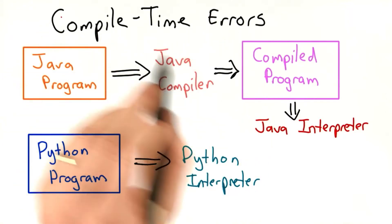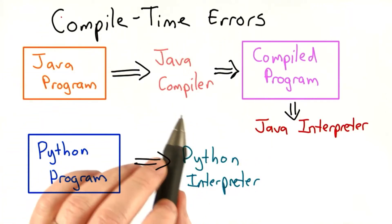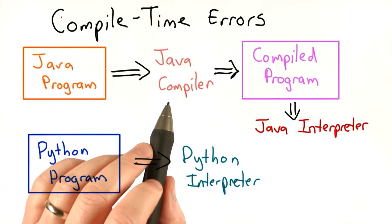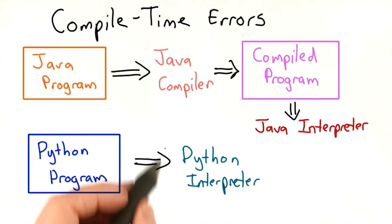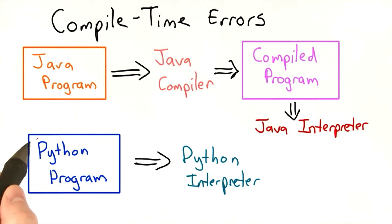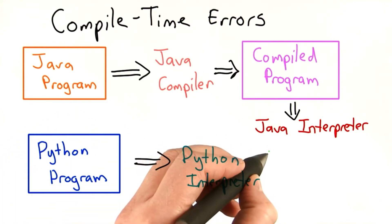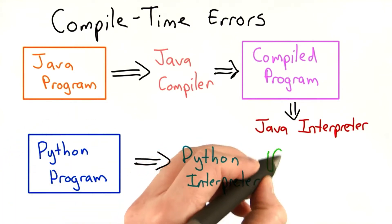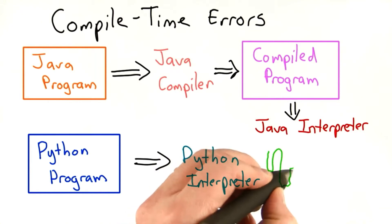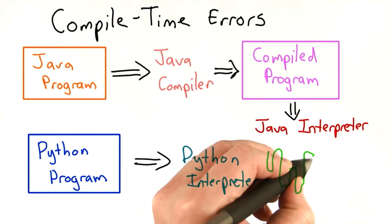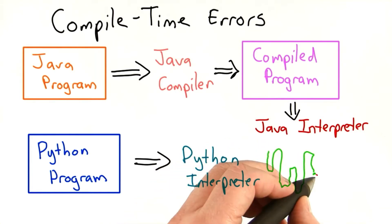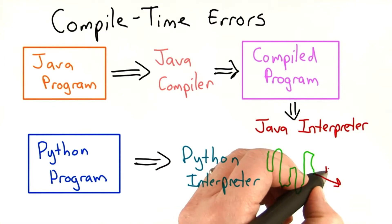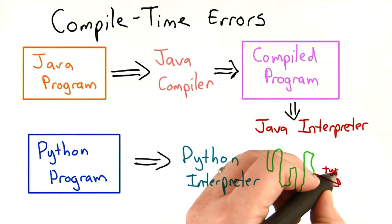I've been talking about compile time errors as the big thing that static typing gives you. Let me explain what that means. When we run a Python program, we feed it as input into the Python interpreter, and the Python interpreter runs the program, jumps around our code, and if at some point we get a type error, the program will crash.